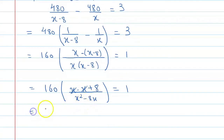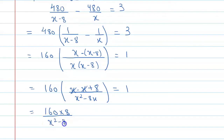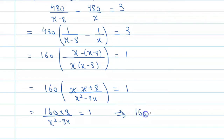The equation becomes 8 upon (x squared minus 8x) equals 1. Cross-multiplying, 160 times 8 equals x squared minus 8x, so x squared minus 8x equals 1280.